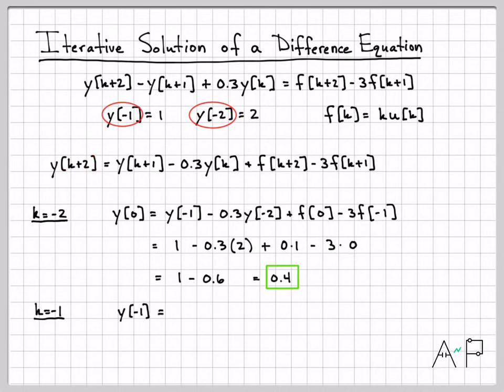So Y of one is equal to... we're replacing everything with K equals negative one. Replace that K and that K and that K and that K with negative one. If you do that, we will get Y of zero minus 0.3 Y of minus one plus F of one minus three times F of zero.